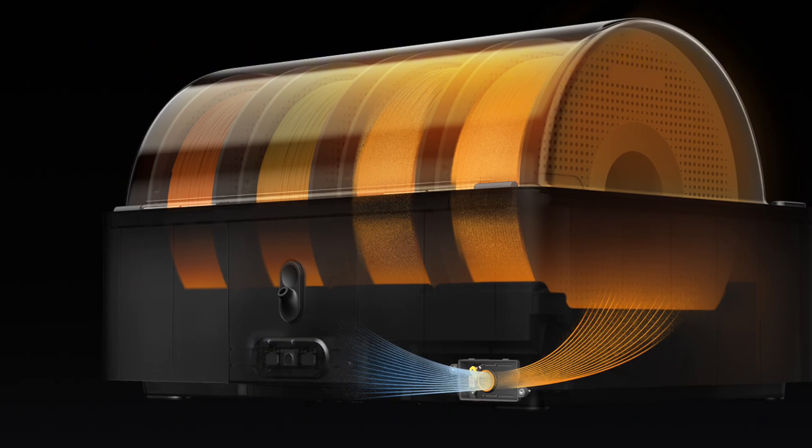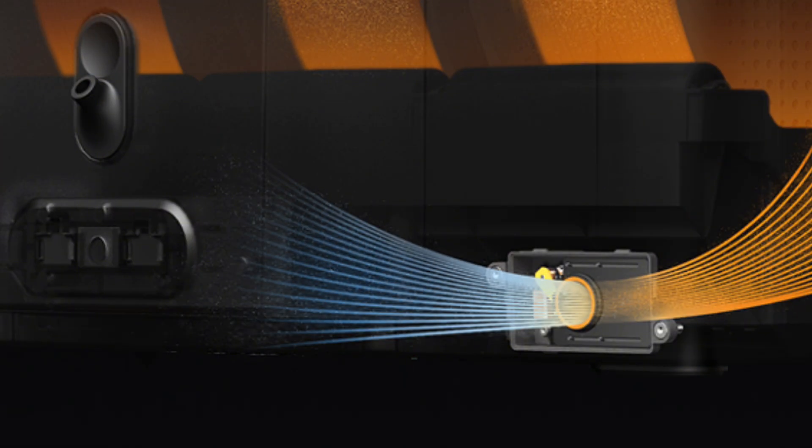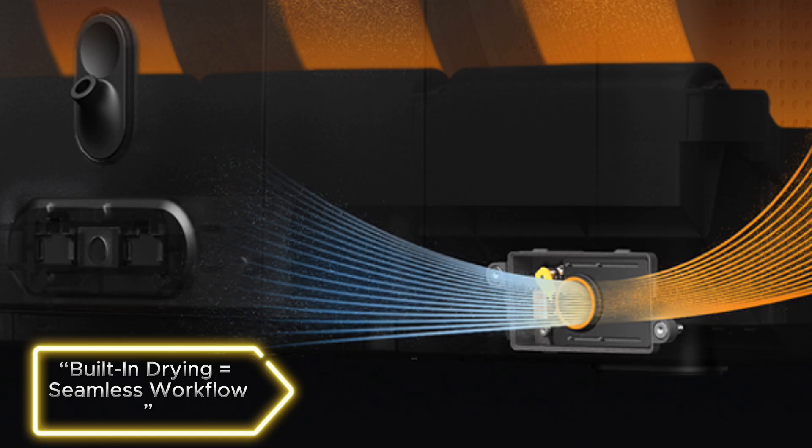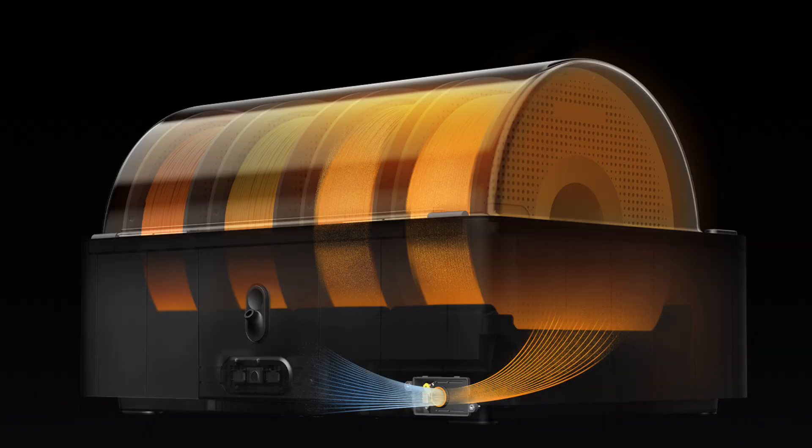Just like the Sunlu filament dryer, it features active air venting and a sealed system to dehumidify filament, but now it's built directly into the AMS unit. No more juggling external boxes or manually transferring spools.